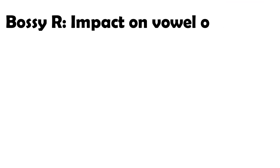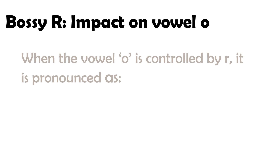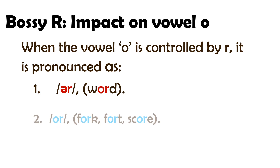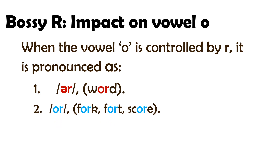The impact of the Bossy R on the vowel O. When the vowel O is controlled by R, it is pronounced as the OR sound, as in the word 'fork' — F-OR-K — Fork.